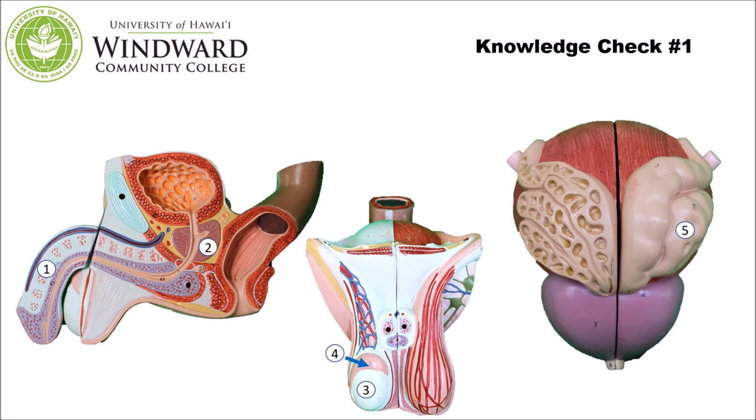You have now reached knowledge check number one. Please pause the presentation and log into Socrative.com, entering the classroom NAD Lab. Enter the identities for structures 1 through 5 of the male reproductive system. Once you have identified these structures, unpause and go on to the next section.